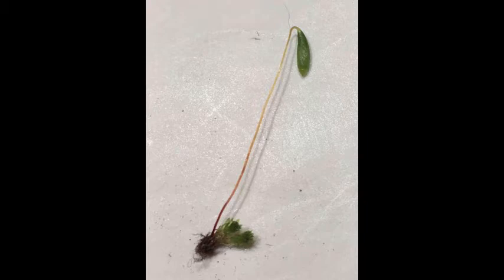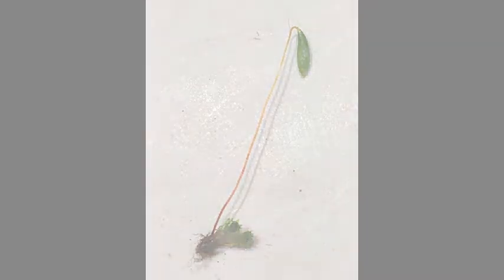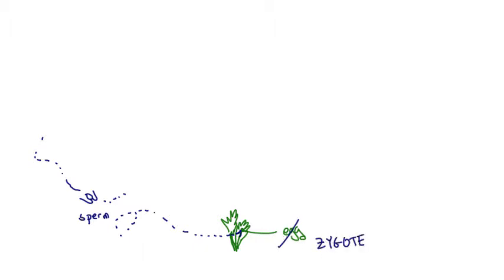The long stalk and capsule is the daughter—a diploid with twice as much DNA as the gametophyte, carrying both its mother's genes and a full set of chromosomes from its father. The green gametophyte contained an egg that got fertilized by a sperm cell coming from elsewhere, from a different gametophytic parent. The union of sperm and egg resulted in a diploid zygote, which then grew into the sporophyte daughter—the long stalk and capsule—which is a different plant from the gametophyte, not a part of it.